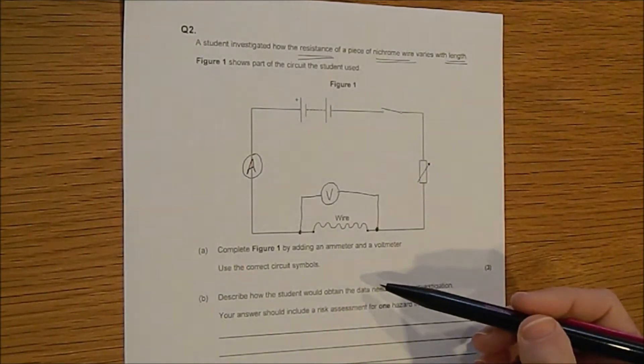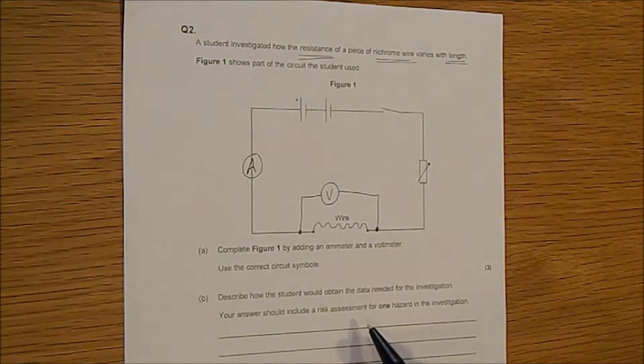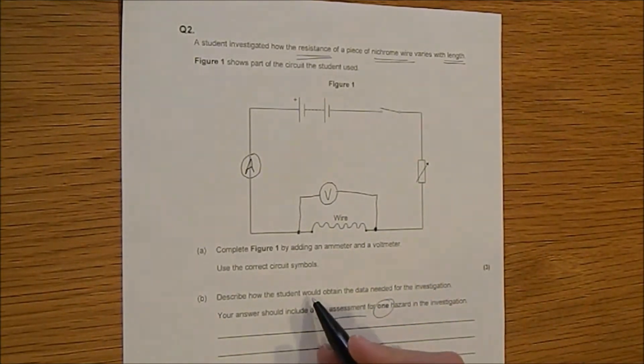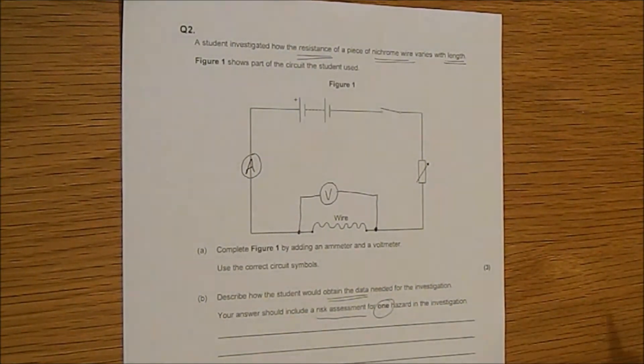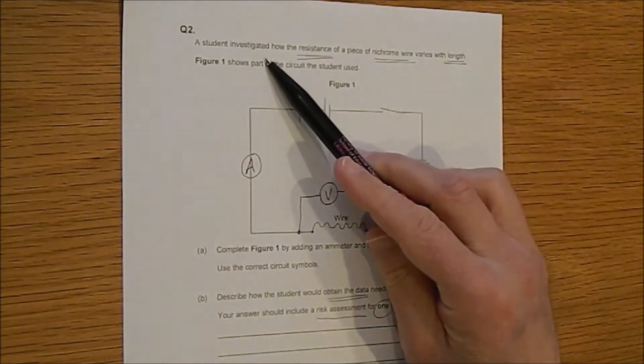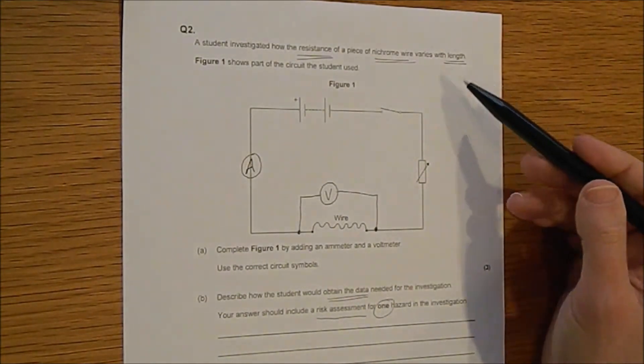Describe how the student would obtain data needed for the investigation. Your answer should include a risk assessment for one hazard in investigation. So you want a risk assessment but only for one hazard. And how would they obtain the data? Well let's try and think some of these things through. What are they doing?